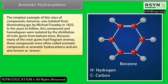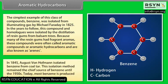In the years to follow, this compound and its homologues were isolated by the distillation of resin gums from balsam trees. Because many of the resin gums had fragrant aromas, these compounds were often called aromatic compounds or aromatic hydrocarbons, and are also known as arenes. In 1845, August von Hoffman isolated benzene from coal tar. This isolation method remained the chief source of benzene until the 1950s. Today, most benzene is produced from petroleum.